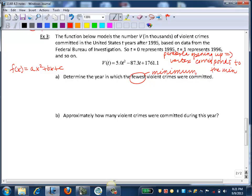So we want to find the year. That year means we want to find the t value. So we want to find the t value that's associated with that minimum, with that vertex of the parabola. So we're going to find negative b over 2a. In this case, our a value is 5.0, and our b value is negative 87.3. So we'll fill in: the opposite of negative 87.3 over 2 times 5.